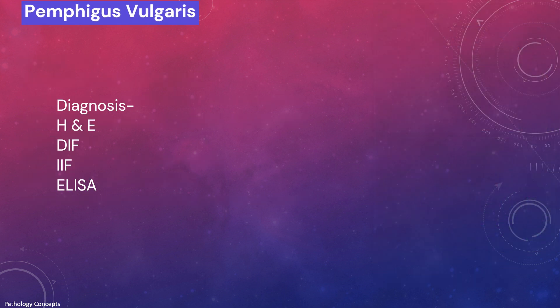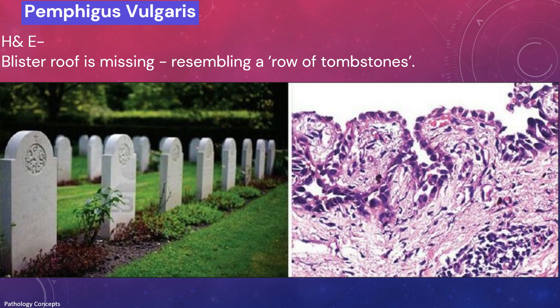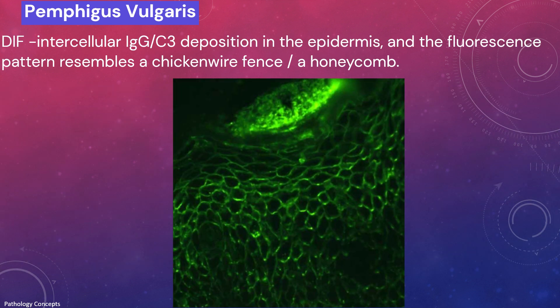Diagnosis is done by H&E, direct immunofluorescence (DIF), indirect immunofluorescence, and ELISA. DIF is always performed on normal-appearing perilesional skin. On H&E, if the blister roof is missing, the basal keratinocytes may separate from one another laterally, resembling a row of tombstones. DIF in pemphigus vulgaris reveals intercellular immunoglobulin G or C3 deposition in the epidermis showing a chicken-wire fence or honeycomb fluorescence pattern.